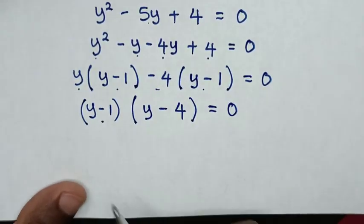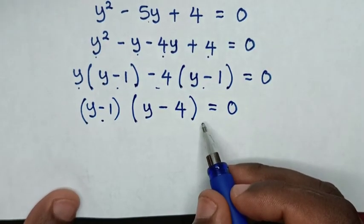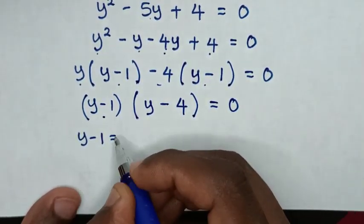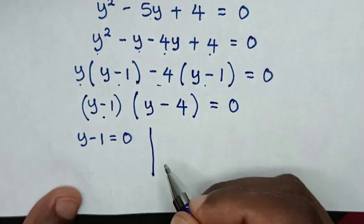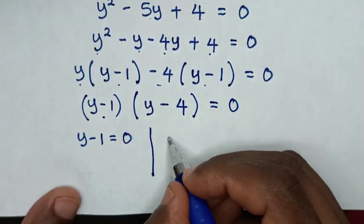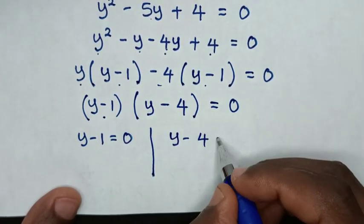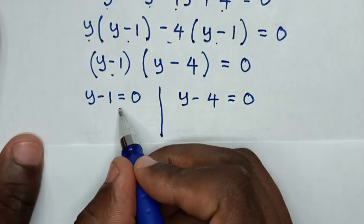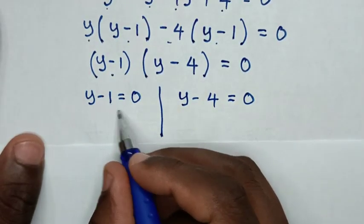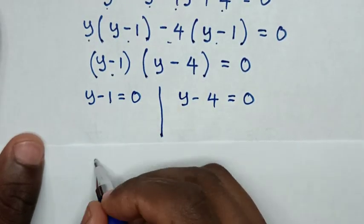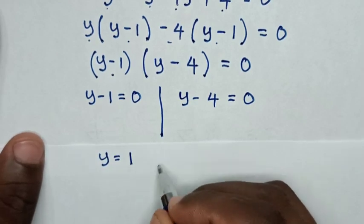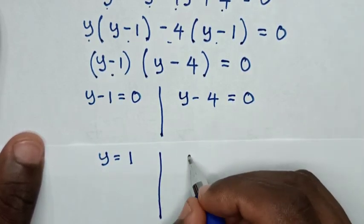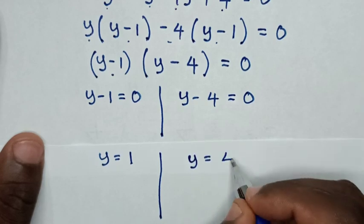From this equation, we have two solutions: the first solution is y minus 1 equals 0, and the second solution is y minus 4 equals 0. Taking negative 1 to the right side gives y equal to 1, and taking negative 4 to the right side gives y equal to 4.